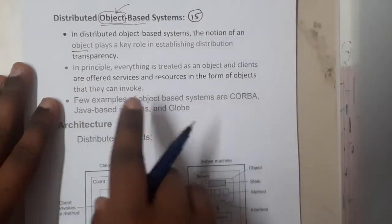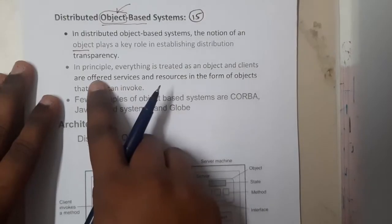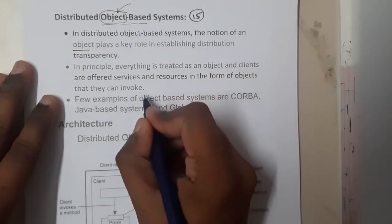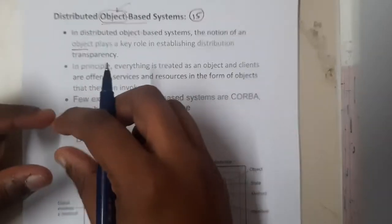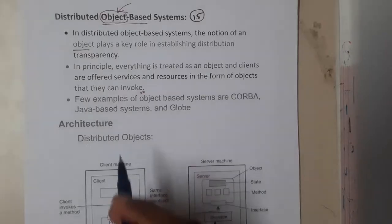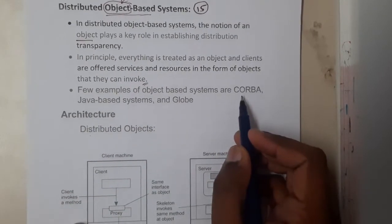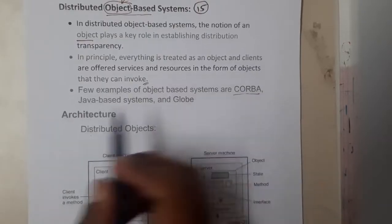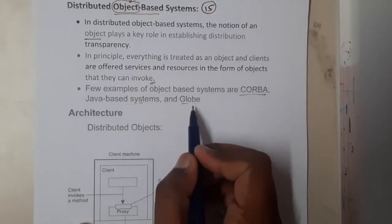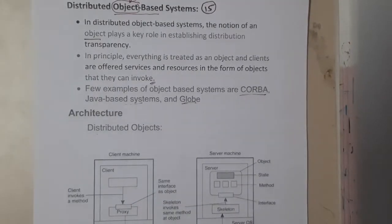In principle, everything is treated as an object and clients are often served resources in the form of objects. Even the data which is being sent is in the form of objects. The best examples for these systems are CORBA (C-O-R-B-A), Java-based systems, and Globe (G-L-O-B-E). These are the three popular systems we'll be discussing.